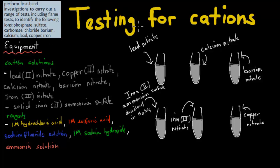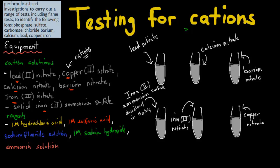The next one is testing for cations — very similar to the last one. We've got different types of cations this time: lead nitrate, copper nitrate, calcium nitrate, barium nitrate, iron nitrate, and solid iron ammonium sulfate, which you dissolve in water. These are all our cations. We also have our reagents: hydrochloric acid, sulfuric acid, sodium fluoride solution, sodium hydroxide, and ammonia solution — these are the ones we test the cations with.